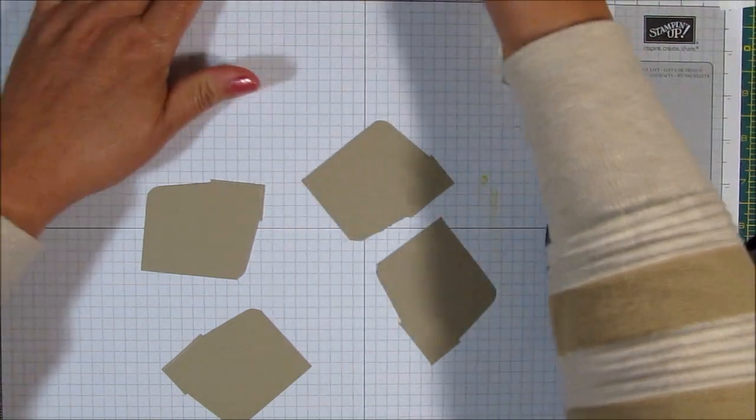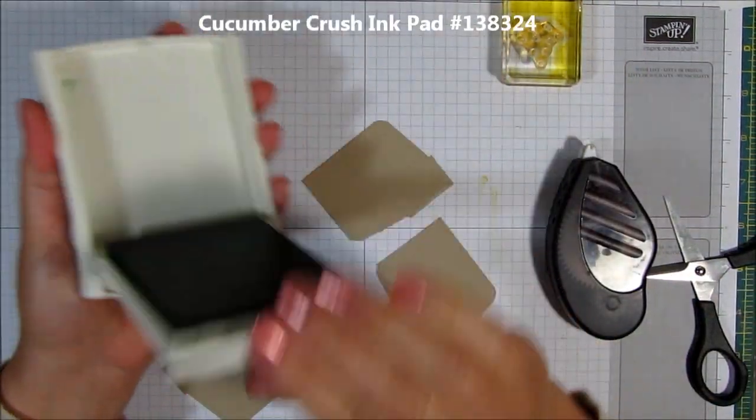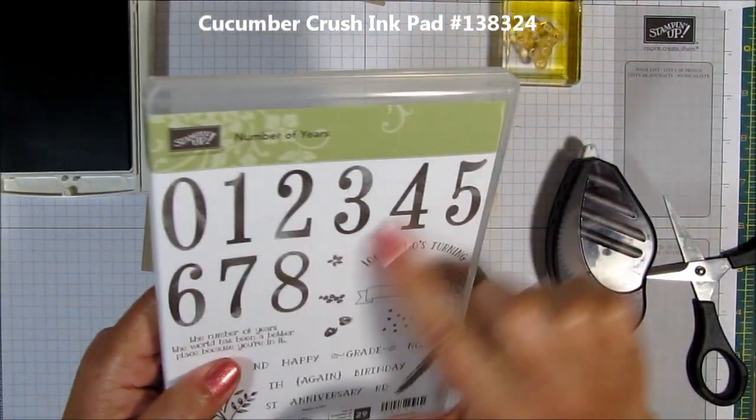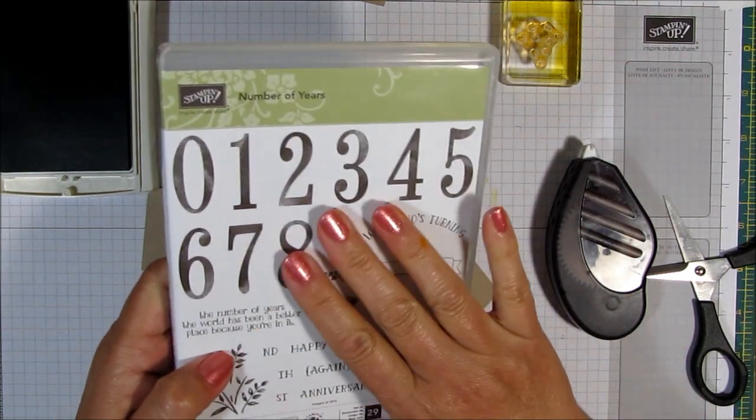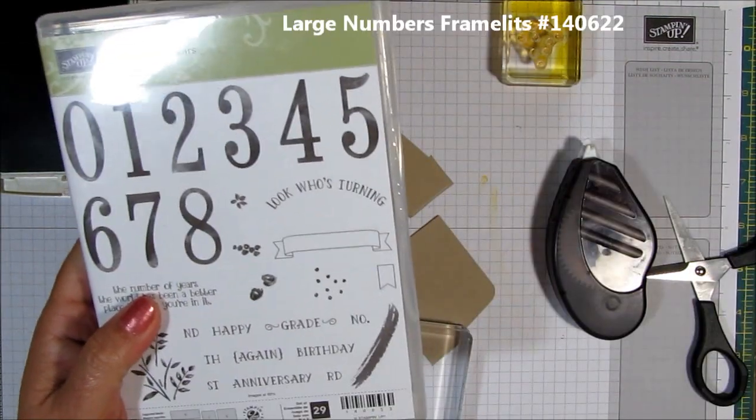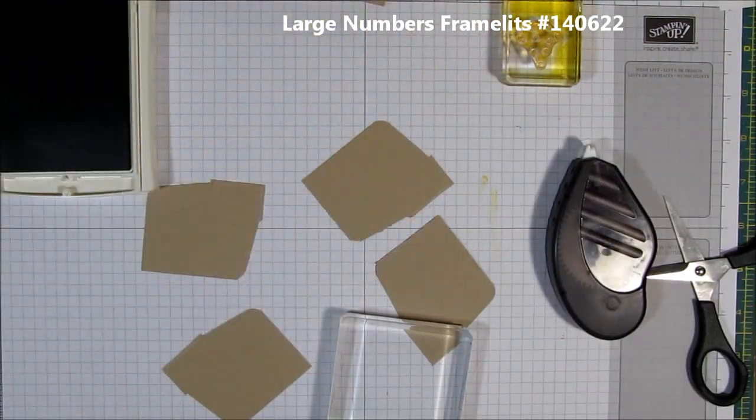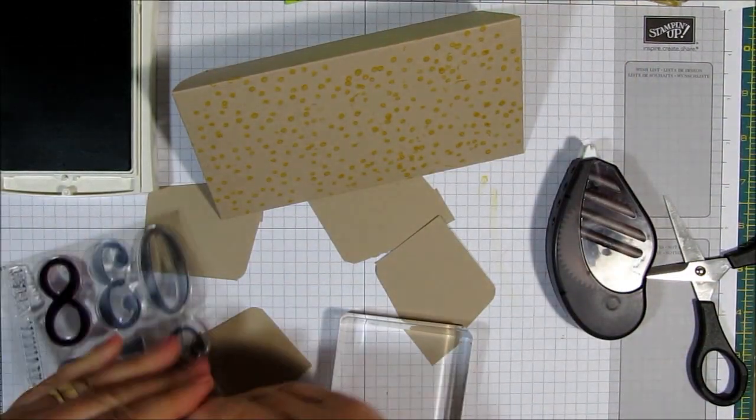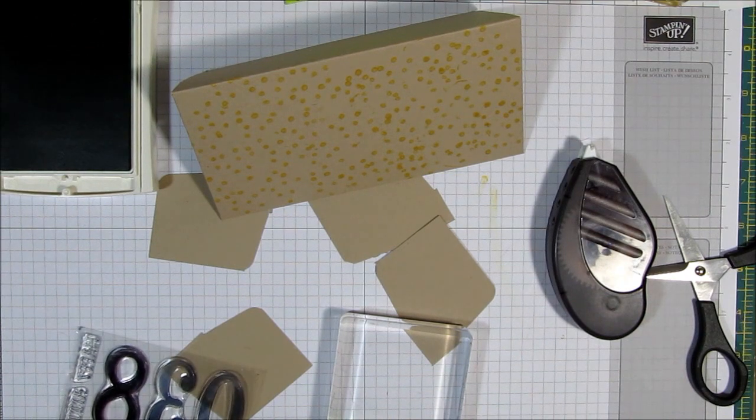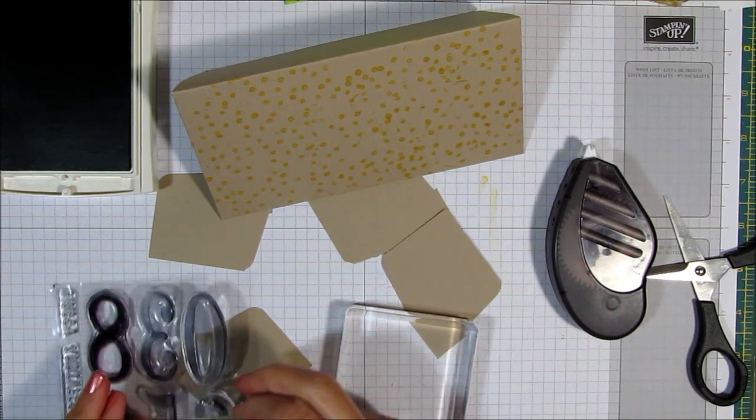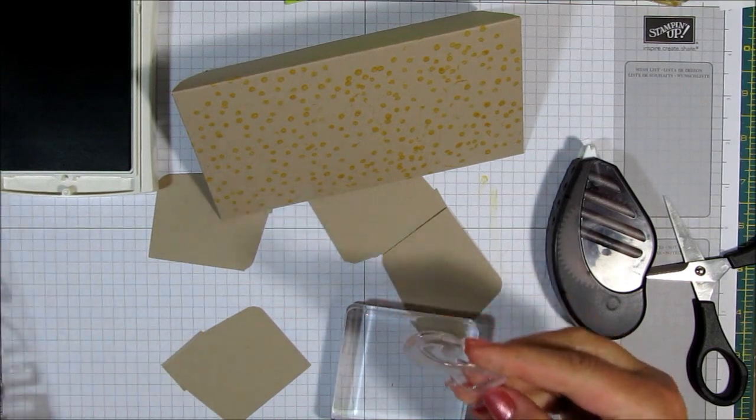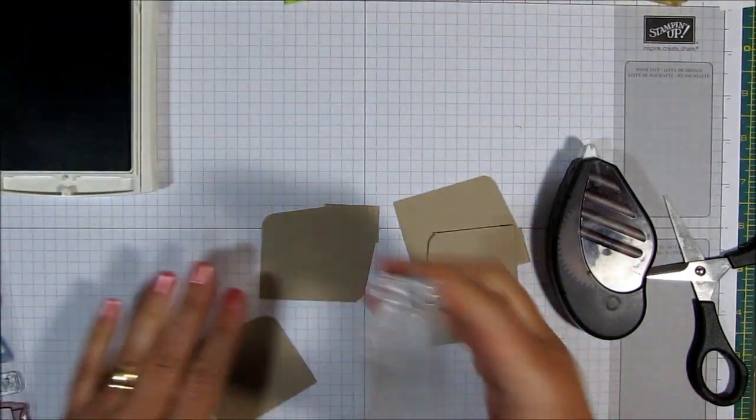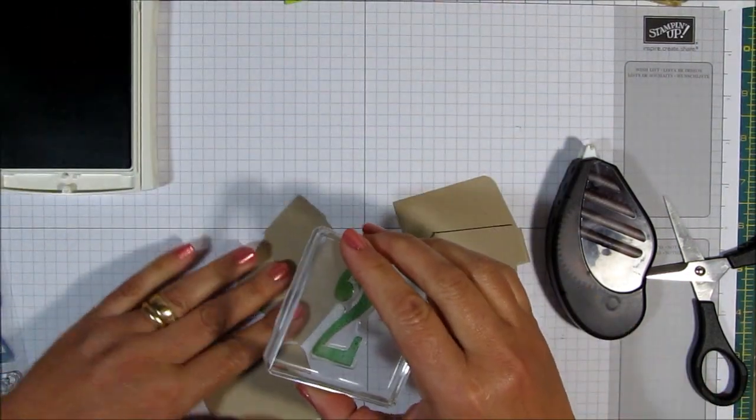So, what I'm going to do is I'm going to get out my Cucumber Crush ink. And I'm going to be using some of the numbers from in here. I'm going to also be cutting them out with the framelits called large number framelits. And so, what I'll do is I will take the two from here. Oops. I just got some ink on my hands. I'm taking the two out and I'm placing it on my block. And I'm going to stamp this two right here.